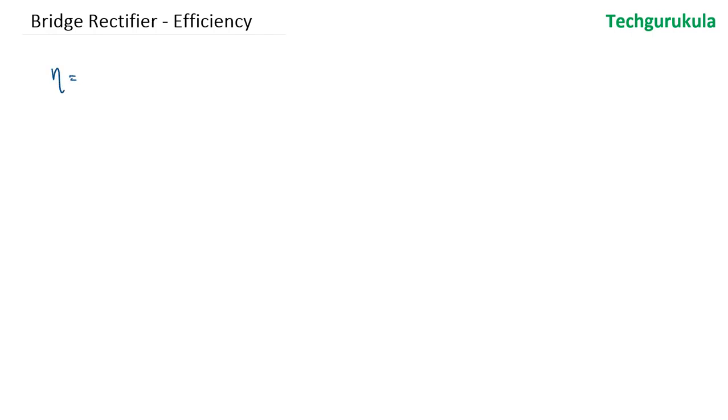In this video, we are going to see the efficiency of a bridge rectifier. Efficiency is defined as the ability of the rectifier to convert the input power to DC power. So we take that ratio to be output DC power to that of the input power.